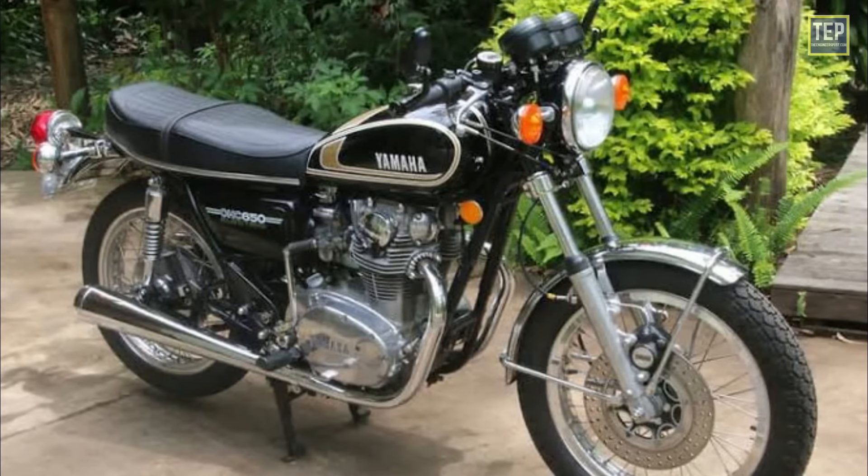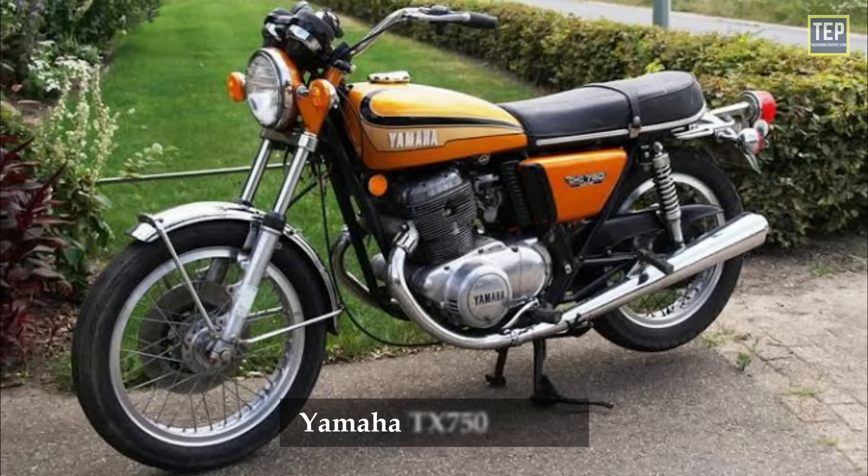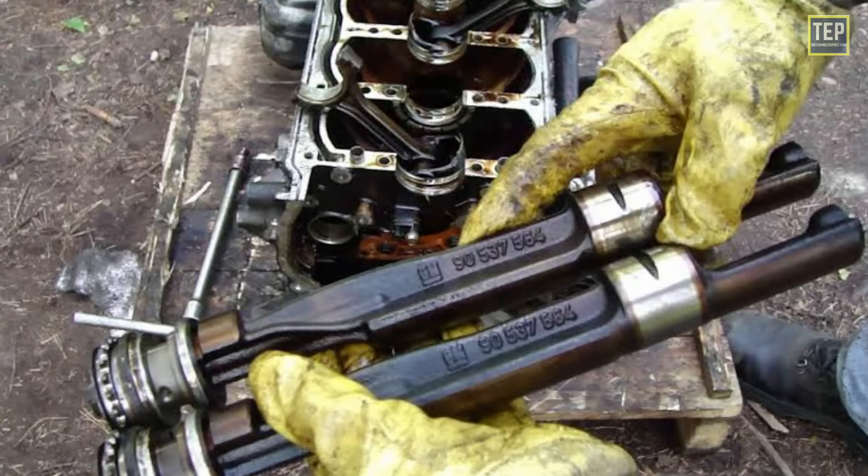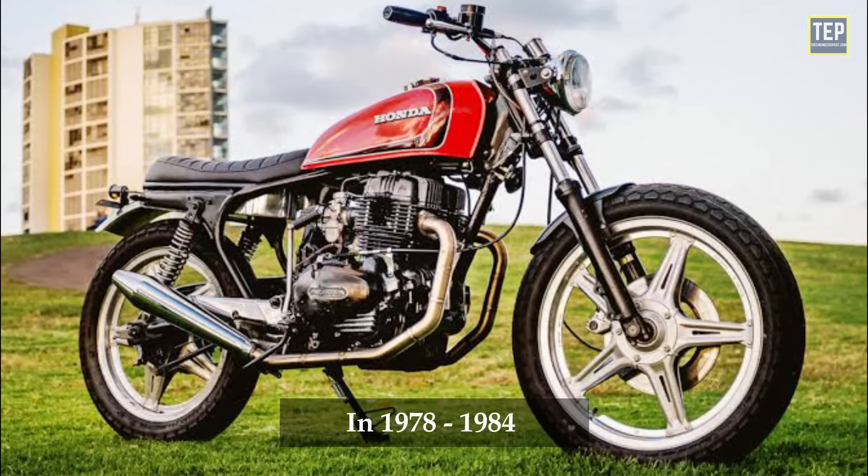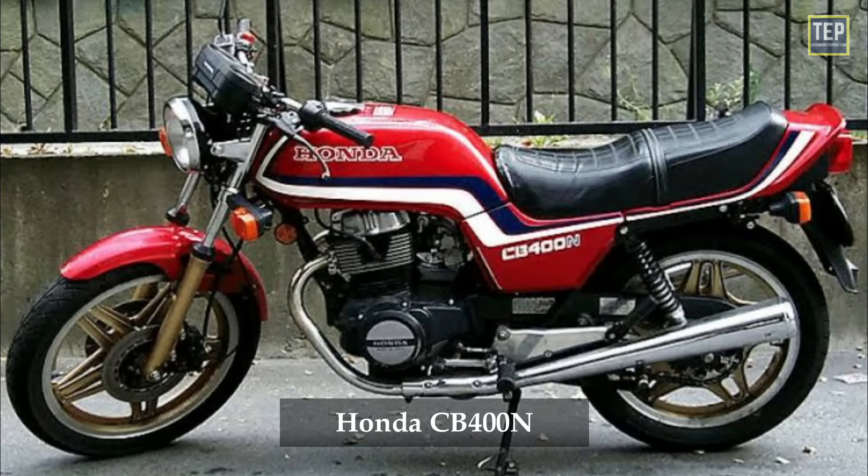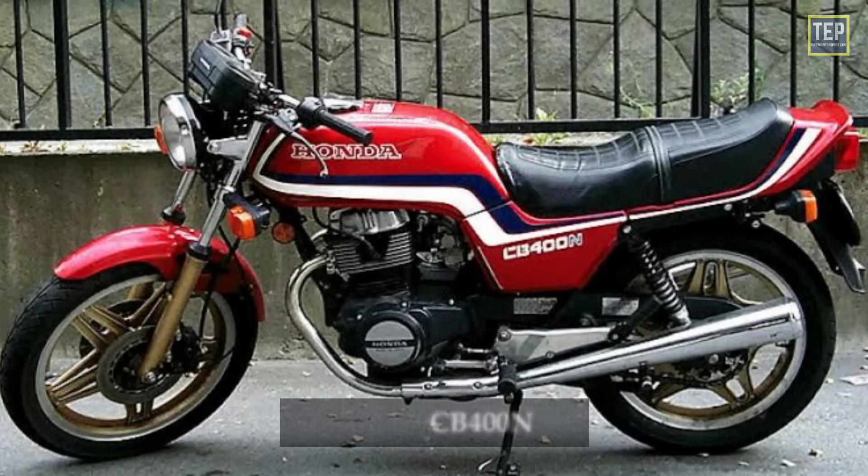Larger engines, such as the Yamaha XS650 and Yamaha TX750, often used balance shafts to reduce the vibration. In 1978-1984, Honda CB250N and Honda CB400N engines also used a 360-degree crankshaft.